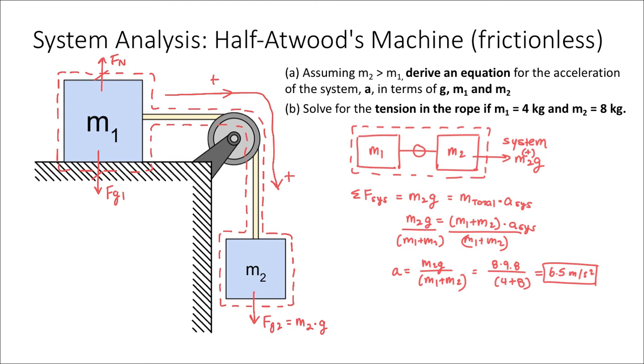I can look at either block to find the tensional force, because they both have the same tensional force acting on them. I'm going to choose block m1, because I know that the only force acting in the x direction on block m1 is that tensional force. The force diagram for block m1 looks like this: T is the tensional force, the normal force points up, and the gravitational force points down, but they're equal, so I won't worry about those.